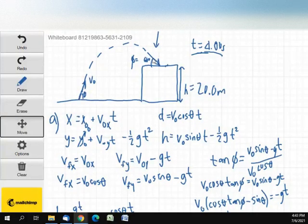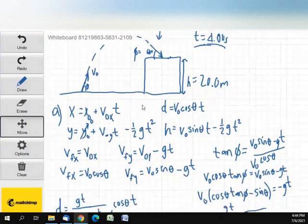I drew a diagram. I made note that phi is 60 degrees when it comes down here. The time is 4 seconds, and the height is 20 meters.